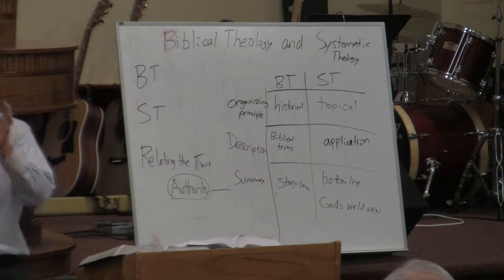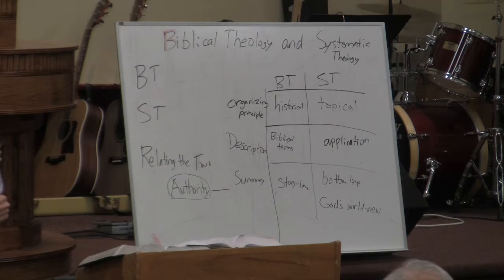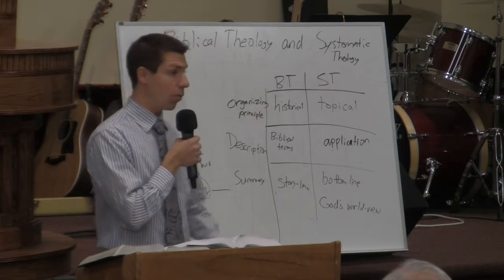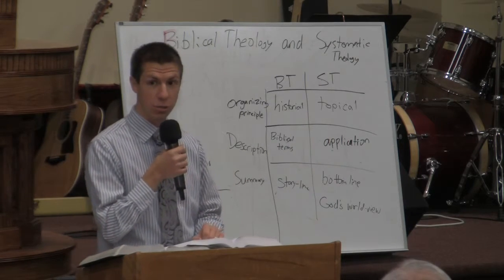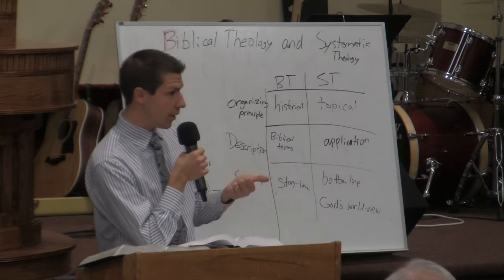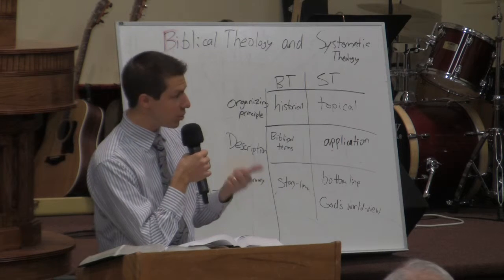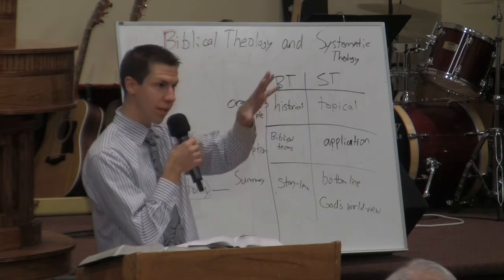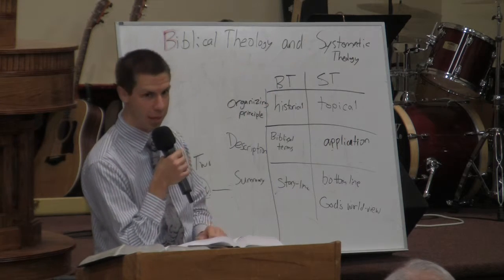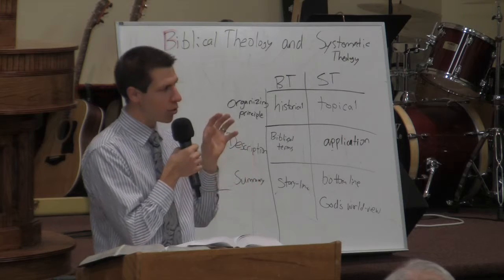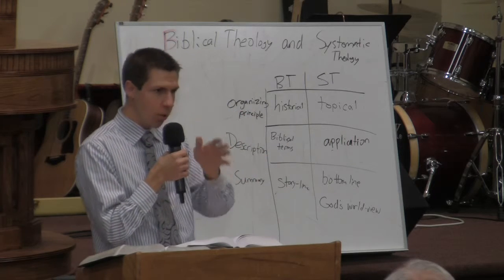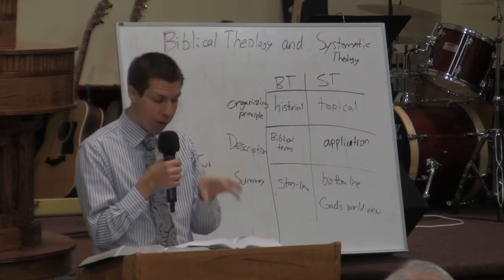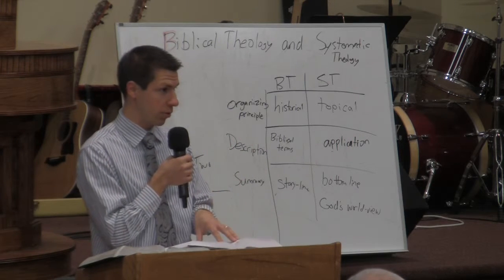You can understand not just the bottom line but how the story develops in order to get to the bottom line. To make your own systematic theology, you take the disciplines of exegesis and biblical theology and use both to arrive at a systematic theology — an understanding of what is right, what is wrong, what is error, and to rightly divide the word of truth.